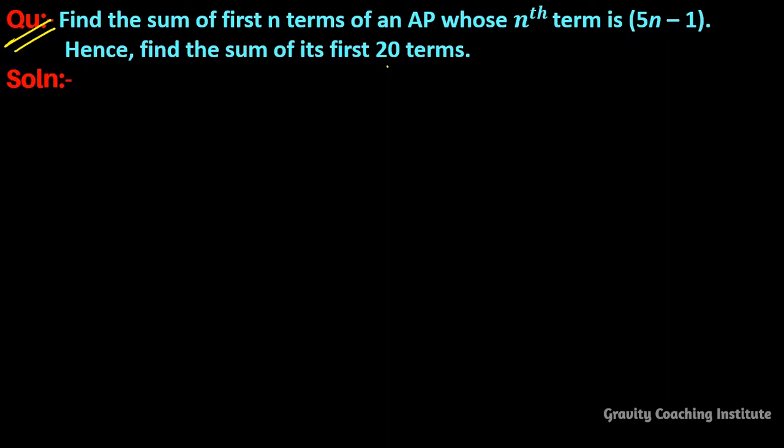Question: Find the sum of first n terms of an AP whose nth term is 5n minus 1. Hence, find the sum of its first 20 terms.